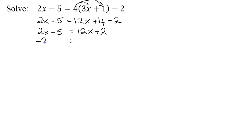So I'm going to have to subtract 2x from both sides. Notice I line up my like terms to make life easy. So 2x minus 2x is 0. I get negative 5 equals 12x minus 2x is 10x plus 2.